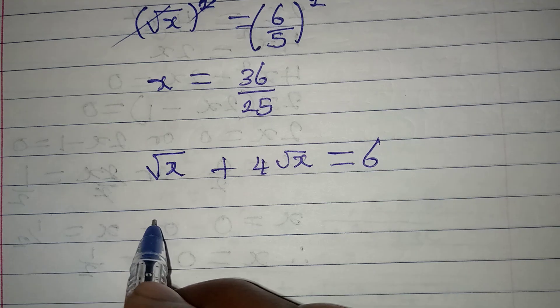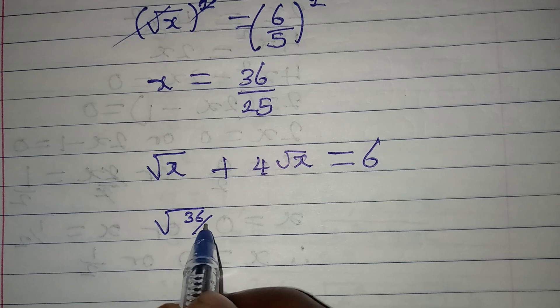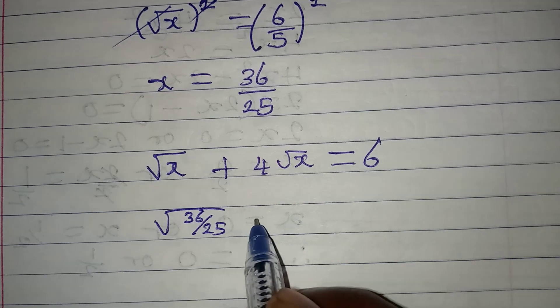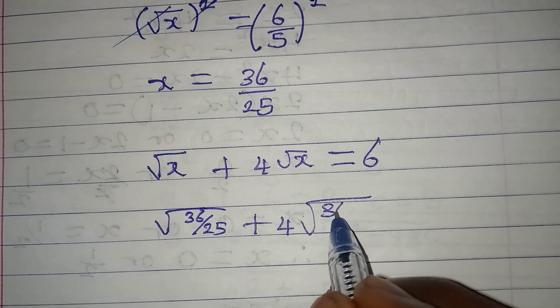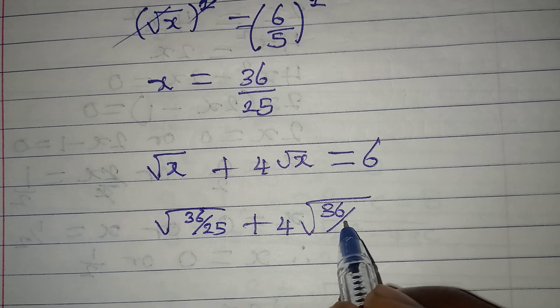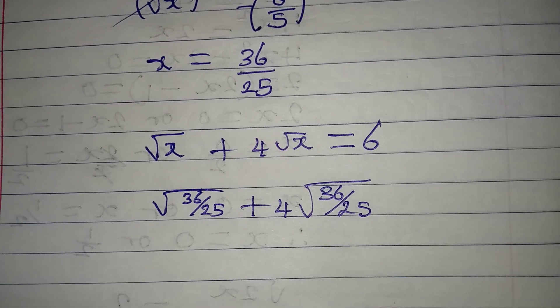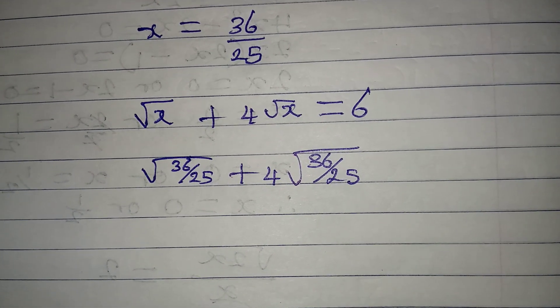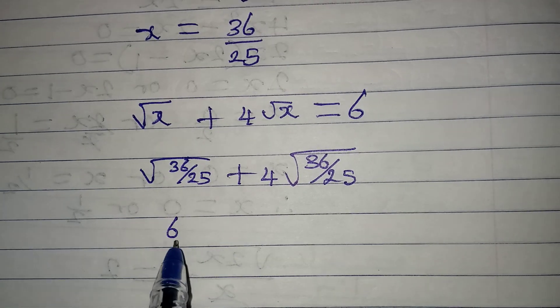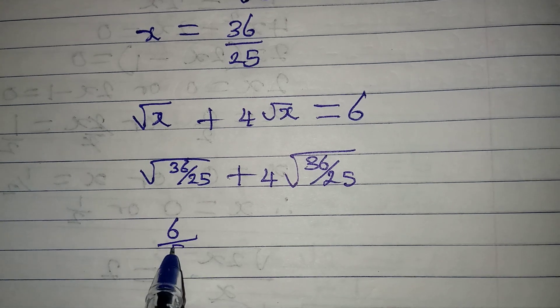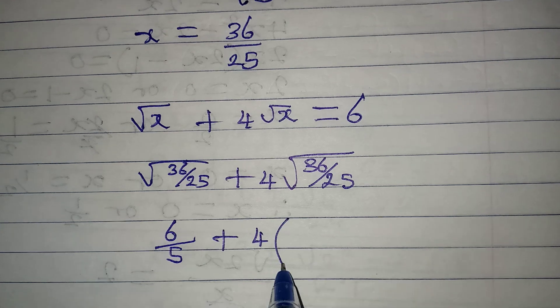Now we have square root of x is 36 over 25, then plus four into square root of 36 over 25. Square root of 36 is six, square root of 25 is five, then plus four into square root of 36 is six, square root of 25 is five.